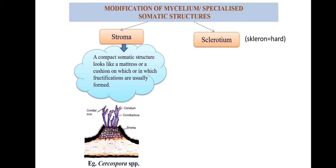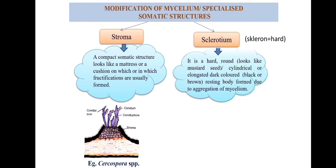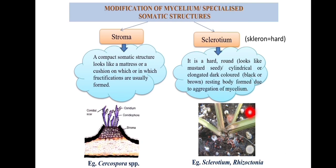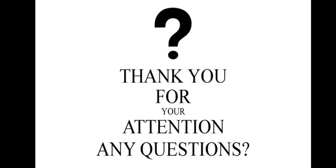The next specialized structure is sclerotium. Sclerotium comes from the word 'scleron', meaning hard. It is a hard resting structure formed by fungi mainly to tolerate unfavorable environmental conditions. Sclerotia are formed by aggregation of mycelium and are hard, round, cylindrical, or elongated structures that look like mustard seeds. In this photo you can see they look just like mustard seeds. They are produced by two species: Sclerotium and Rhizoctonia.